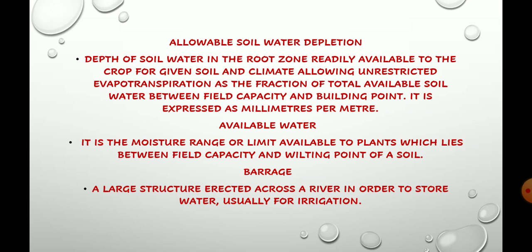So for a particular soil location and particular climate, the depth of soil water in the root zone that is readily available to the crop, allowing unrestricted evapotranspiration, expressed as the fraction of total available soil water between field capacity and wilting point, is known as allowable soil water depletion.